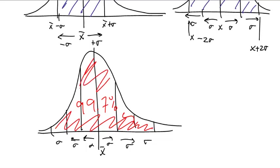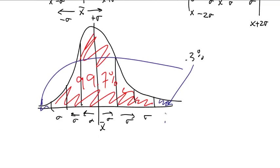But that means that some things aren't in that range. That means that 0.3% is where? It's here and here. And because this is symmetric, that means that half of that, this is 0.15%, and this is 0.15%.